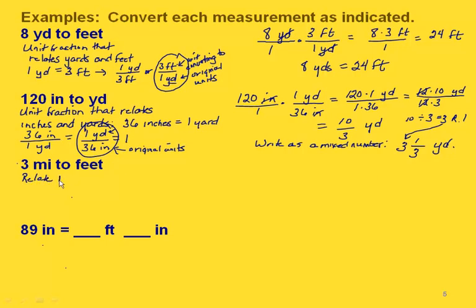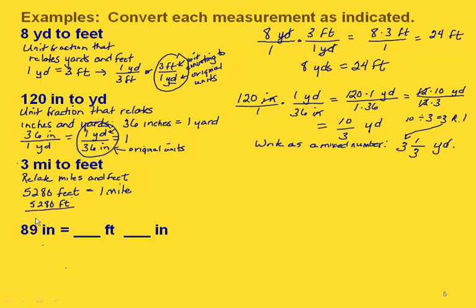Now let's convert 3 miles to feet. We need to relate miles and feet. We know that 5,280 feet equals one mile, so again we can write two unit fractions — feet on top with miles on bottom, or miles on top with feet on bottom. Since we're starting with miles, we want miles on the bottom, and we want feet on the top. So this is the correct unit fraction to use.